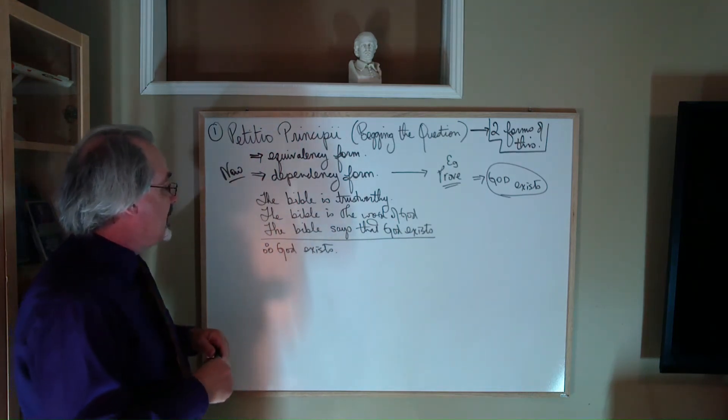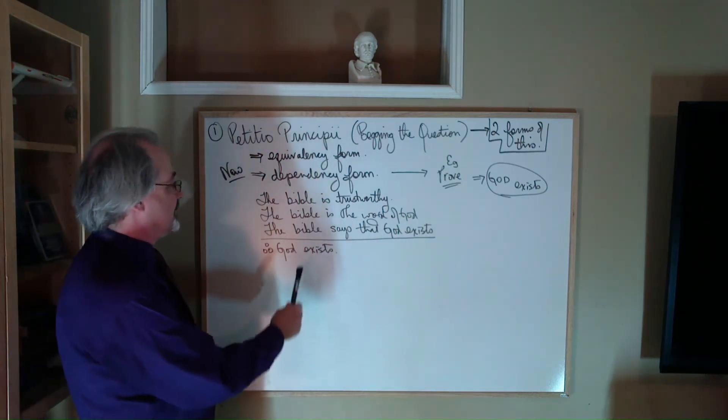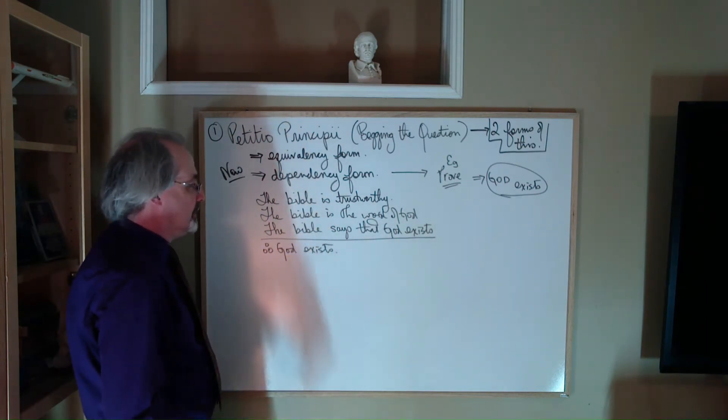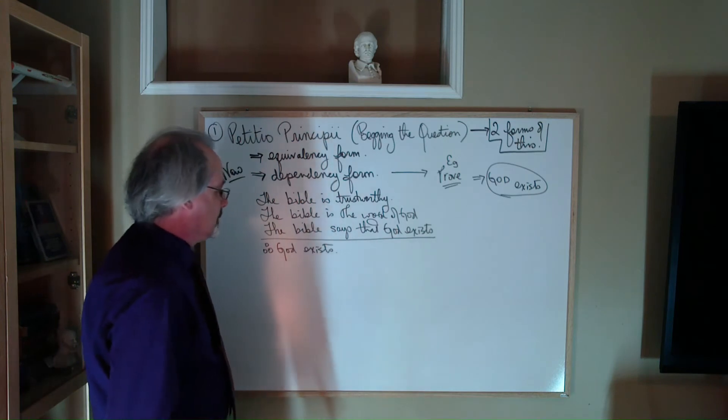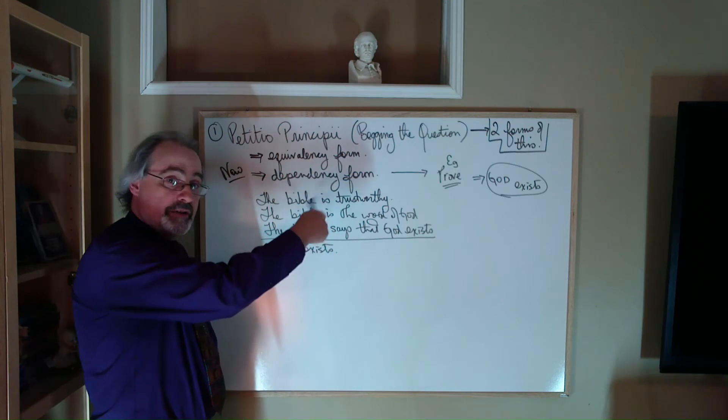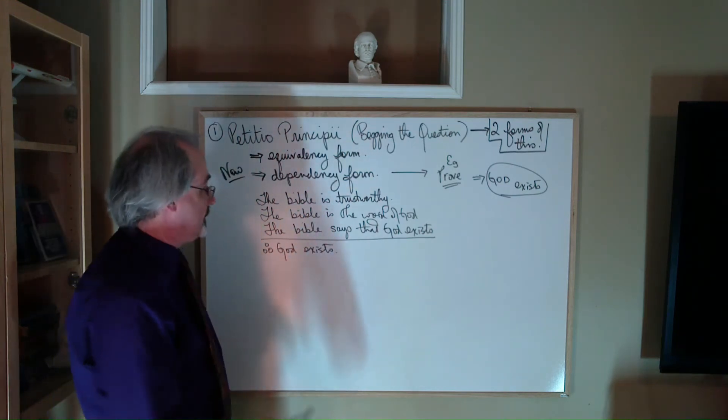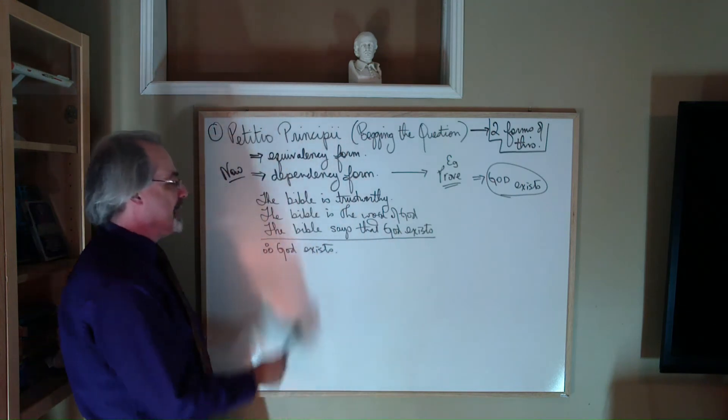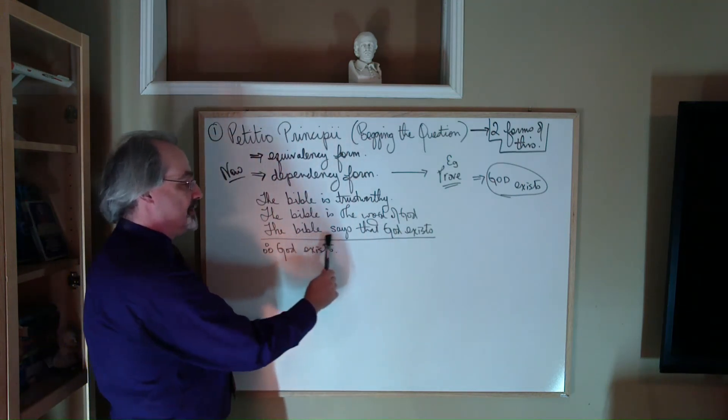But this is a very blatant form of the fallacy, the dependency version, because if you look at this, the Bible is trustworthy. You might say, well, what's the reason for that? Oh, well, because it's the word of God. That's why it's trustworthy. So there's a bit of an argument going on inside the premises. The Bible is trustworthy because it's the word of God. And then you have a new thing here where it says that God exists.